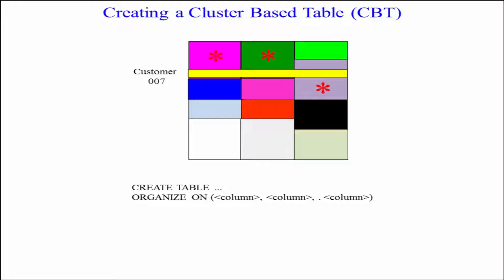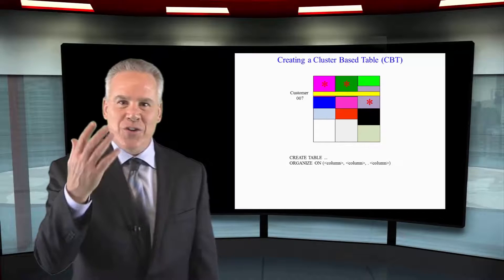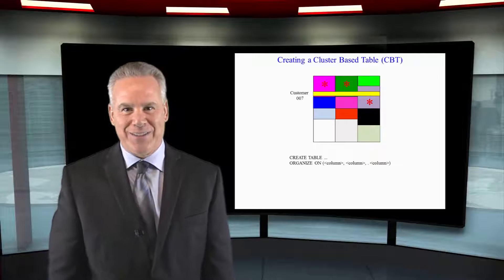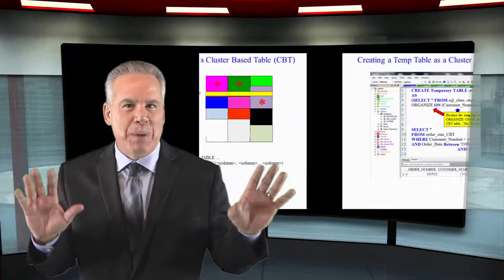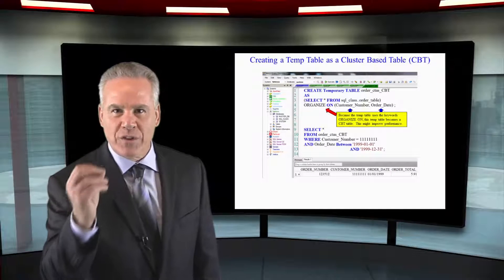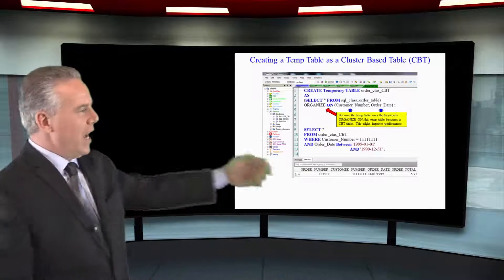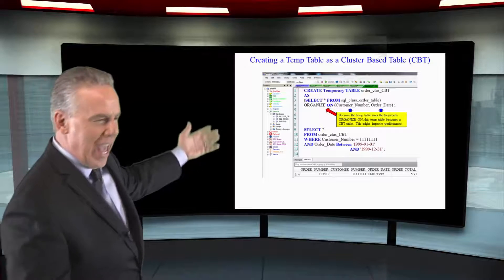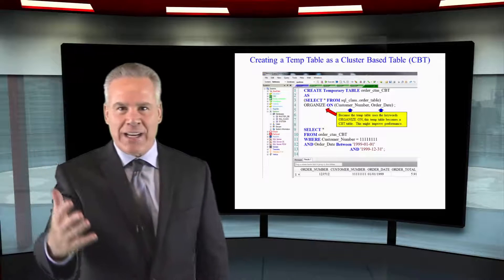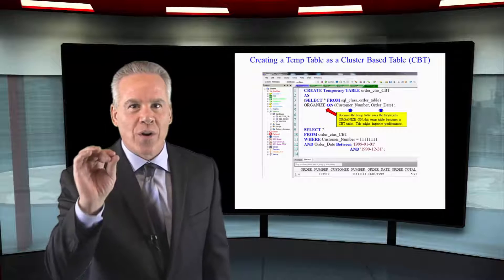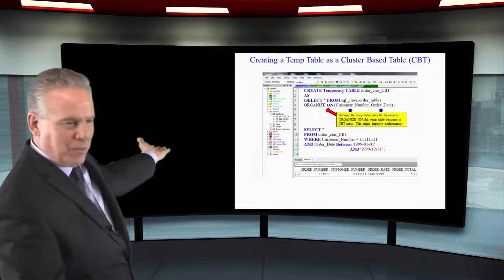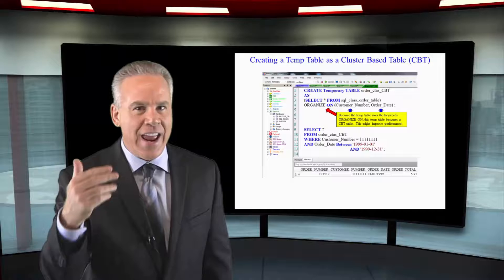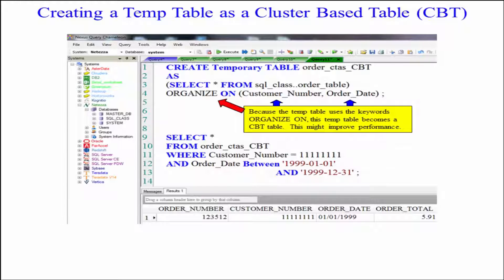Here is the syntax: CREATE TABLE, table name AS, select all the columns from the table, and here's the key word — ORGANIZE ON — and you can do it up to four columns. You can begin to experiment with great performance tuning. I'm going to create a temporary table as, selecting my columns, and then I say organize on customer number and order date, and now I've got a CBT table.